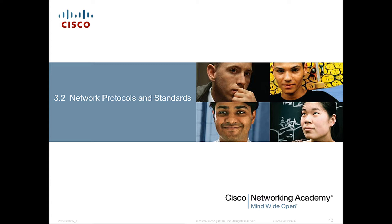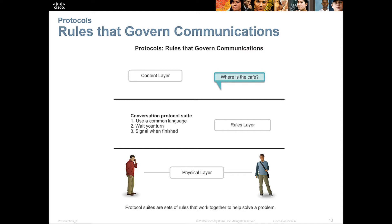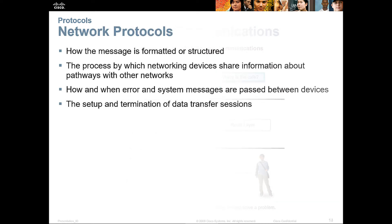Moving on to network protocols and standards — the rules that govern our communication. In general, there's a content layer, a rule-for-communicating layer, and the actual physical layer for how it's sent. The rule layer covers common language, who communicates first, how you take turns, and how you signal when you're done. These network protocols are formatted and structured in a very specific manner, covering how network devices share information and pathways, how and when errors occur, how system messages pass between devices, and the setup and termination of data transfer sessions.